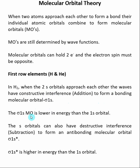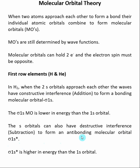This stronger wave is called a bonding molecular orbital, represented by sigma 1s. The sigma 1s molecular orbital is lower in energy than the 1s atomic orbital. The s orbitals can also have destructive interference, or a subtraction of the wave. This forms what's called an antibonding molecular orbital, represented by sigma 1s star — where the star represents antibonding. The sigma 1s star is higher in energy than the 1s atomic orbital.